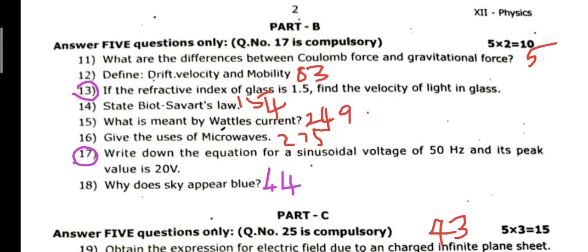Maximum book pack example sums. Two marks examples: page number 5. 12th question: Define drift velocity and mobility, page 83, first volume. 13th question sum I'll explain. 14th question: State Biot-Savart's law, page 154. 15th question: What is meant by wattless current, page 249. 16th question: Give the uses of microwaves, page 275.